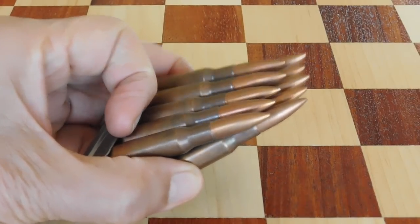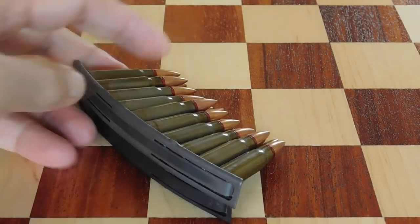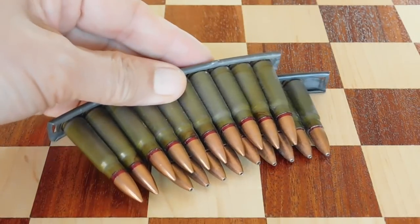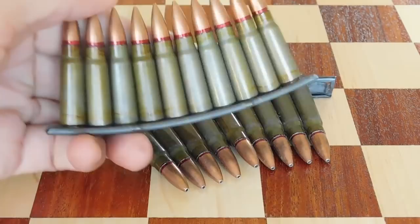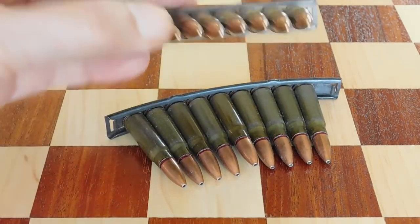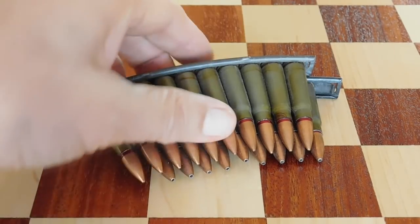But you know what? Can't get this either now. But then also, 7.62x39, all set up in stripper clips for the SKS rifle. This is good stuff. Oh, I love this stuff.